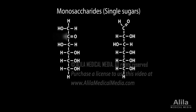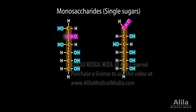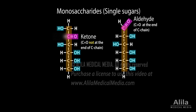Carbohydrates are made of base units called monosaccharides. Monosaccharides consist of a carbon chain with a hydroxyl group attached to all carbons except one, which is double-bonded to an oxygen. This carbonyl group can be in any position along the chain, forming either a ketone or an aldehyde.